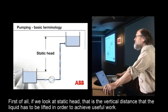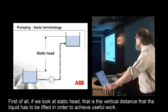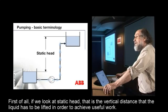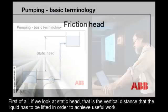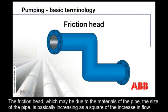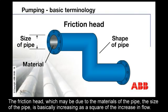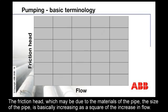If we look at static head, that is the vertical distance that the liquid has to be lifted in order to achieve useful work. The friction head, which may be due to the materials of the pipe or the size of the pipe, is basically increasing as a square of the increase in flow.